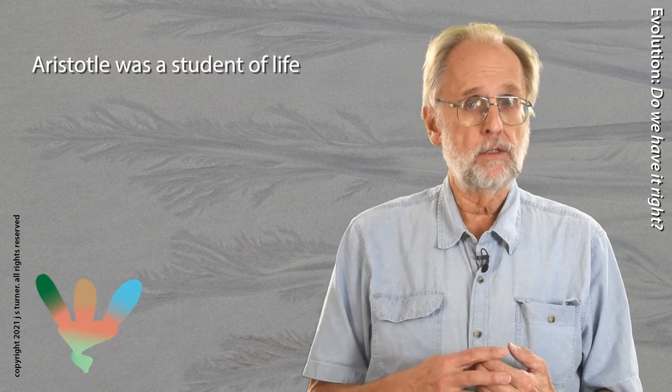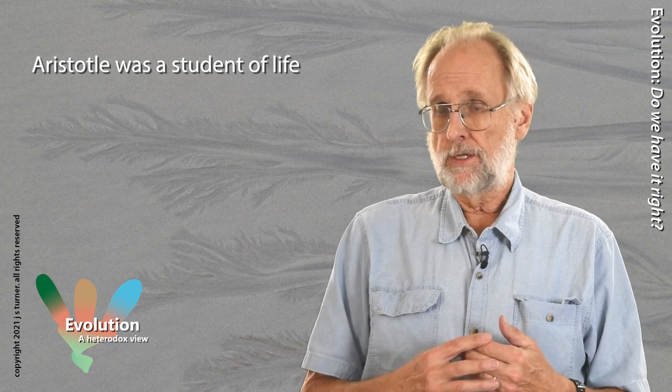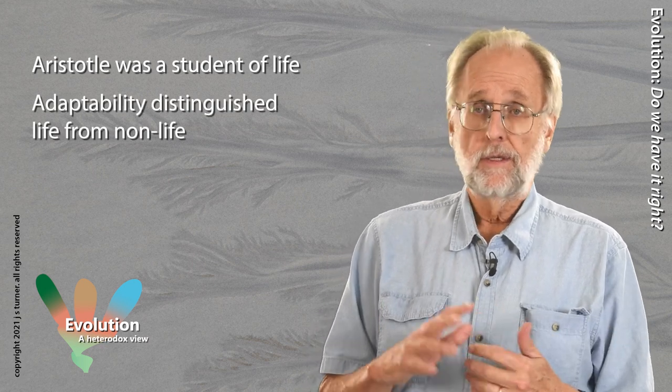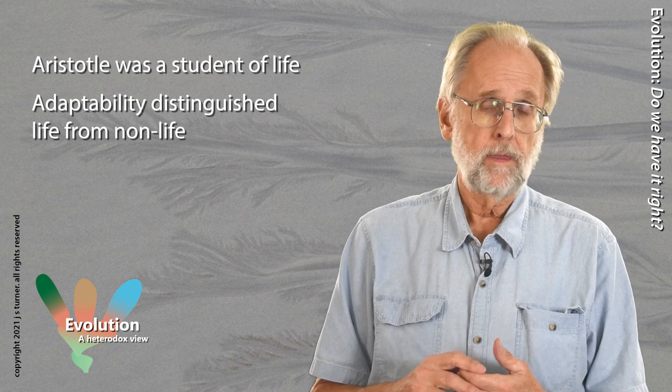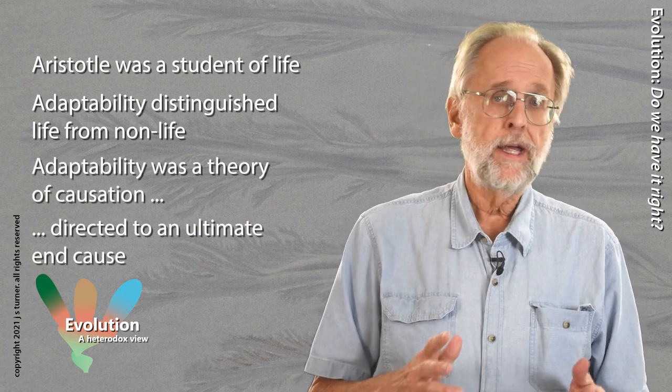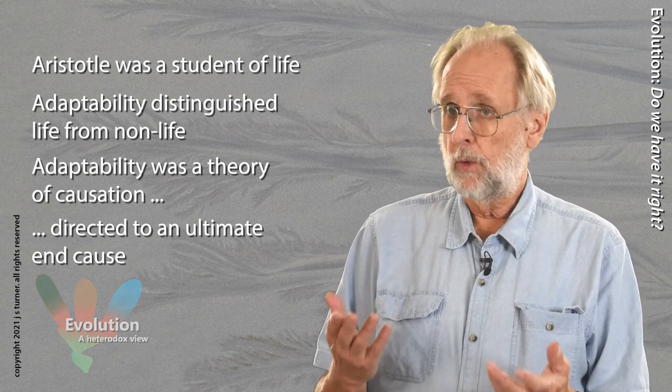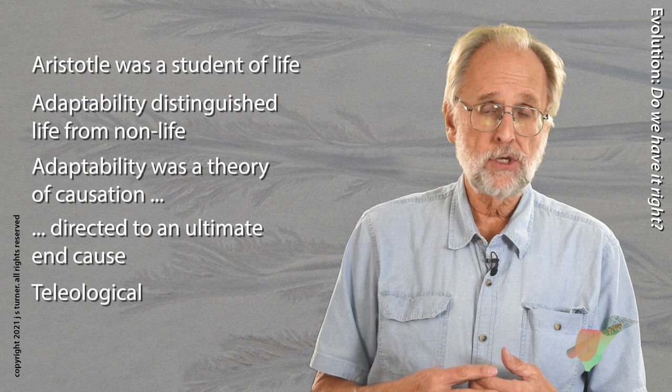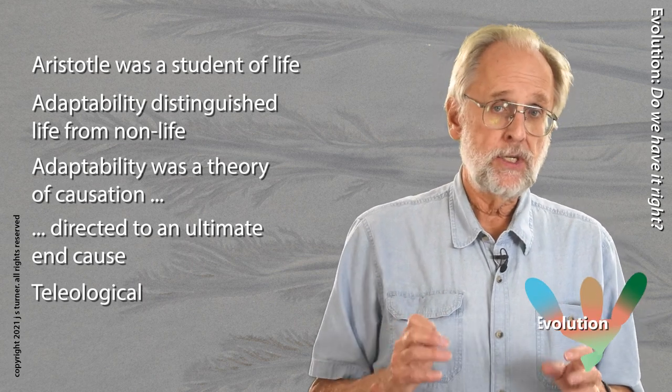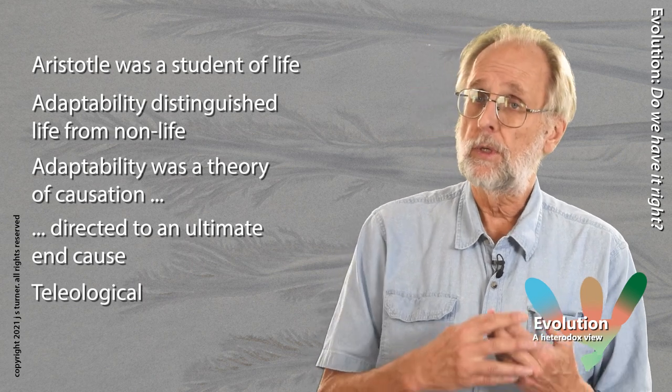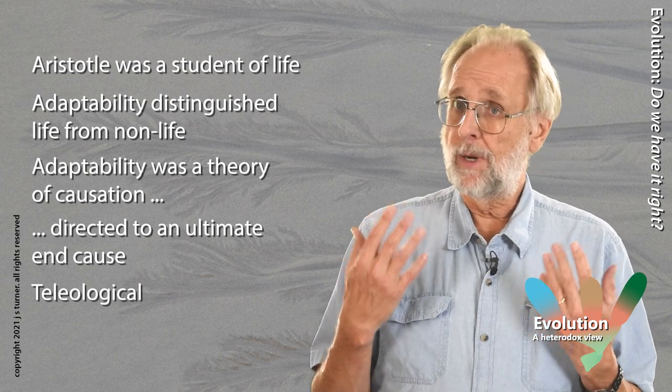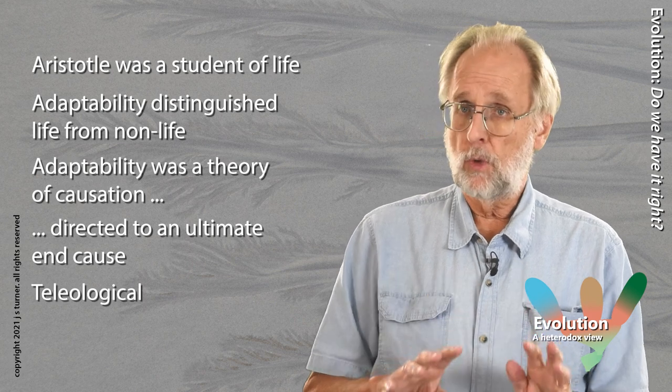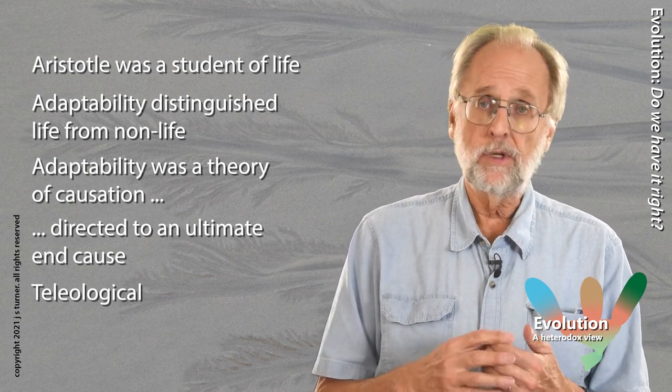The first systematic student of life, as I've already mentioned, was Aristotle. Among the things that intrigued Aristotle about life was its adaptability. Adaptability was, for Aristotle, the main thing that distinguished life from the material universe. Aristotle's scheme for adaptation was a variation on his whole theory of causation, which, like Plato's, was teleological at its heart. That is to say, Aristotle's theory of causation was, frankly, purposeful, striving toward some ultimate end. Plato put his ultimate end with the ideals that resided in the mind of the Demiurge. But Aristotle was more down-to-earth, so to speak, especially with regard to life.